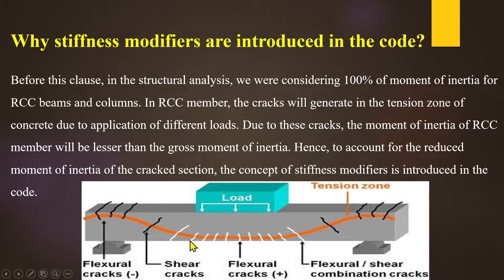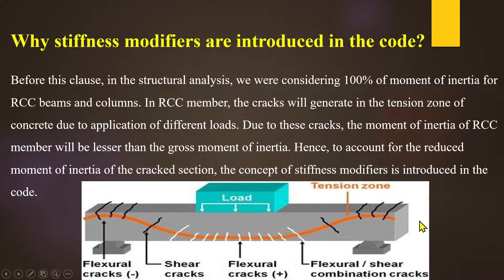In reinforced concrete members, a tension zone is developed. When a tension zone develops, cracks form and the cross-sectional area is reduced. The member's effective section is reduced, and as a result the moment of inertia is reduced. Because cracks are developed, the moment of inertia is reduced, and so we use stiffness modifiers here.